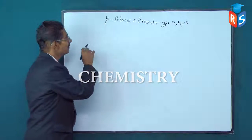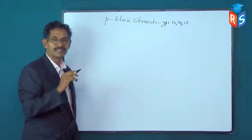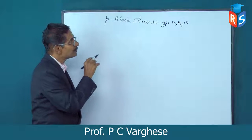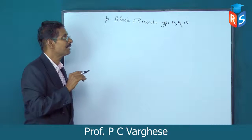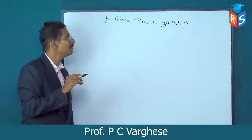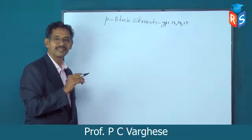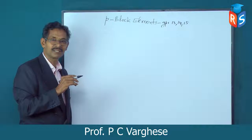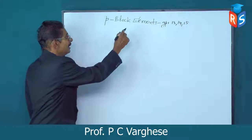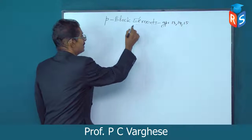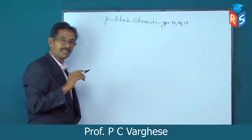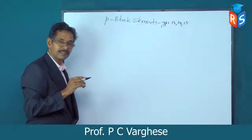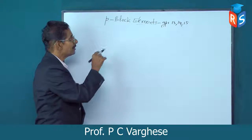The topic we deal with today is P block elements. There are six groups under the P block; today we will cover groups 13, 14, and 15, while groups 16, 17, and 18 will be dealt with on another occasion. By P block elements, we refer to elements whose valence electrons occupy the P orbitals.